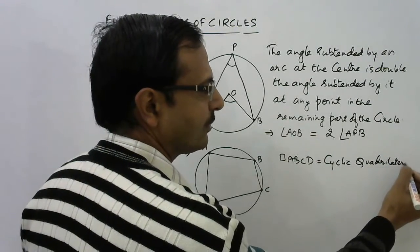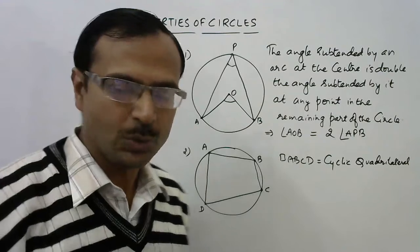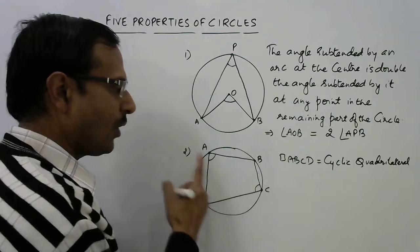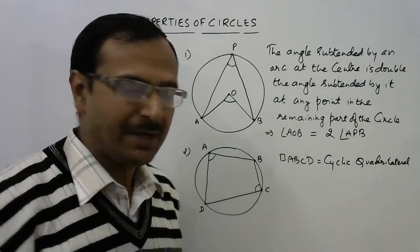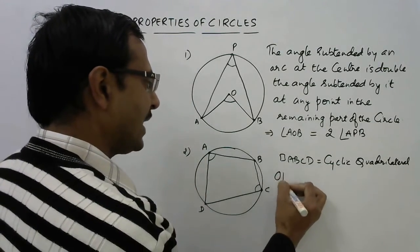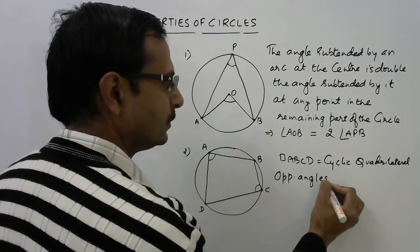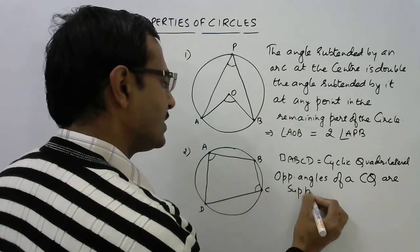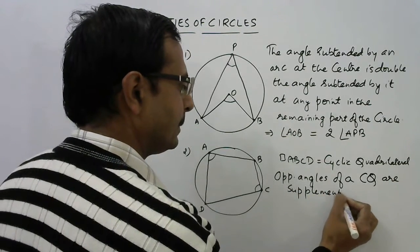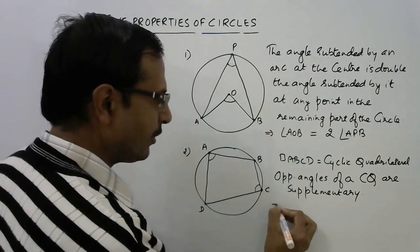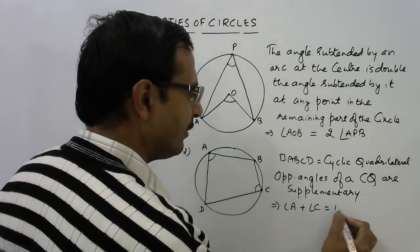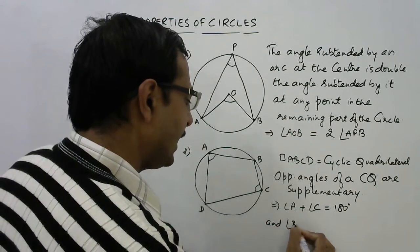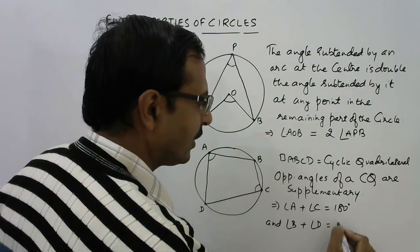There are some properties of this cyclic quadrilateral which we need to know. The first property is that the opposite angles of a cyclic quadrilateral are always supplementary. That means sum of angle A and angle C will be 180 degrees, and sum of angle B and angle D will be 180 degrees.